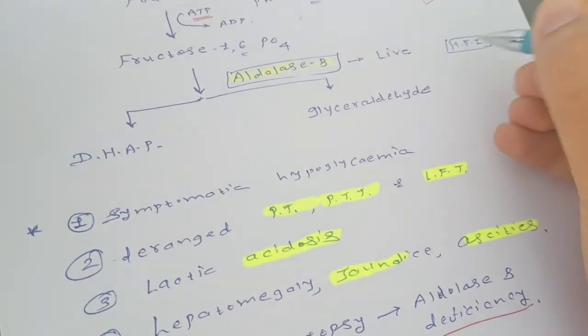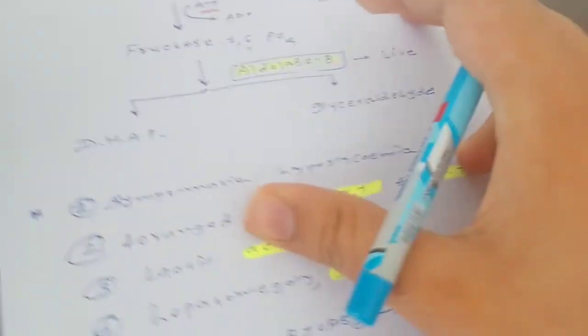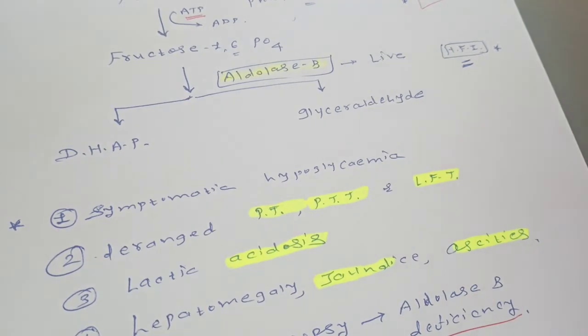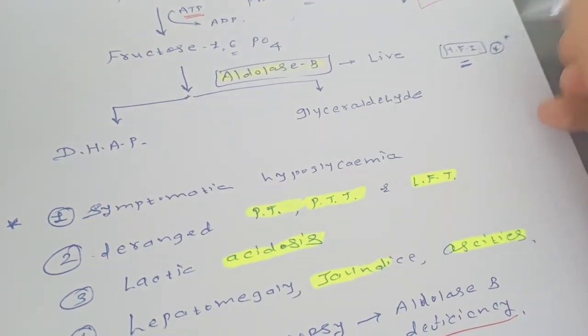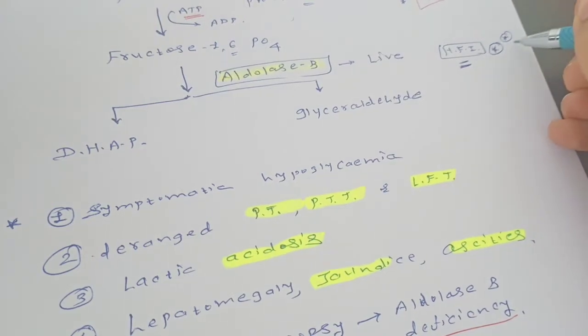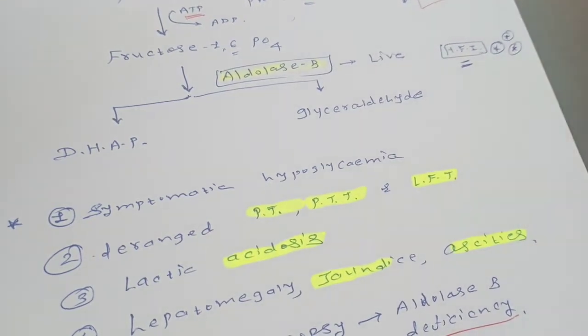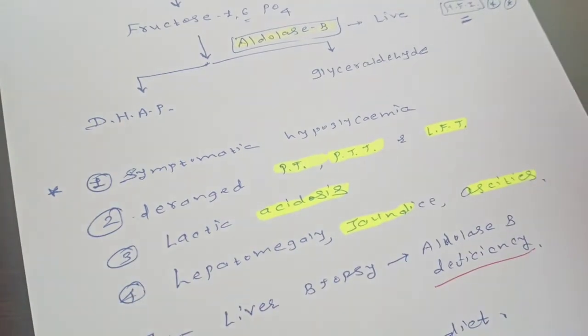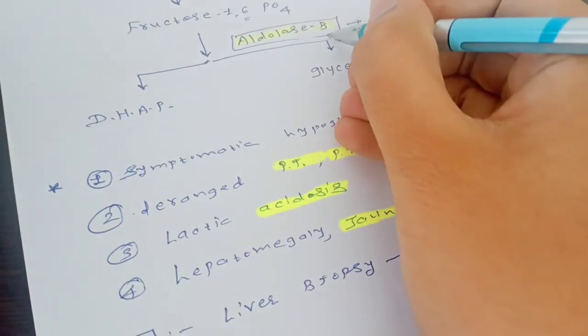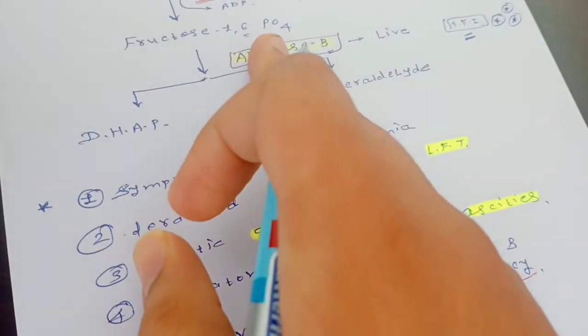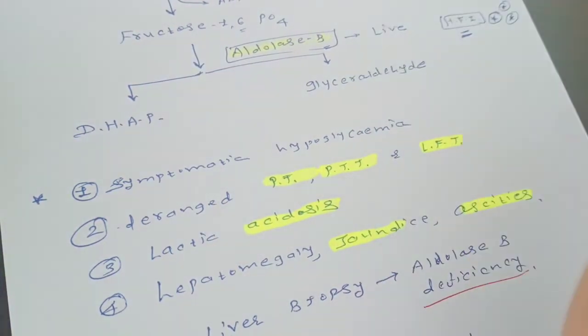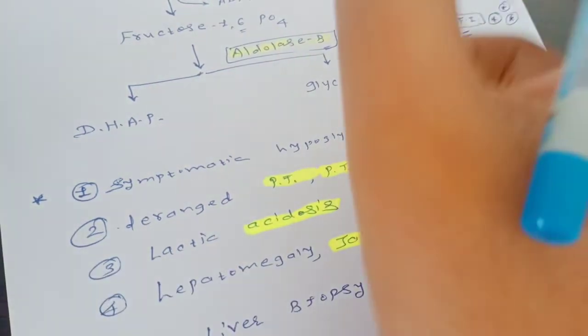The other one, which is known as hereditary fructose intolerance, becomes very harmful to the patient. This is the type of thing which is not only doing deficiency but also produces harm. For understanding, what is doing if the aldolase B enzyme is deficient? Why the name is given aldolase B? Because aldolase is basically producing the fission division. For better biochemistry purpose, you must be knowing that aldolase means division. The fructose-1,6-biphosphate is divided into two parts: dihydroxyacetone phosphate and glyceraldehyde.